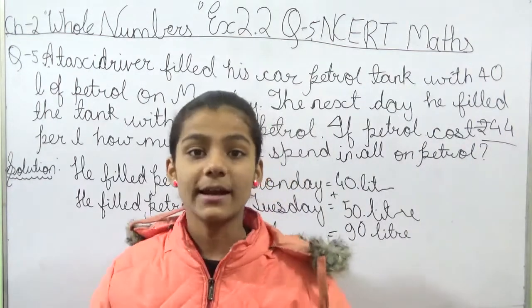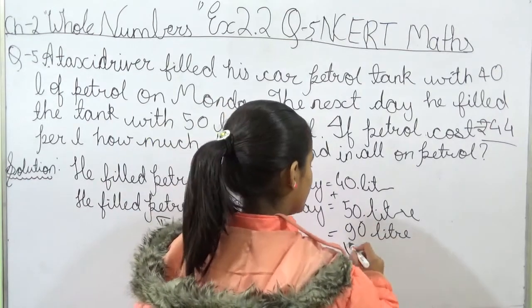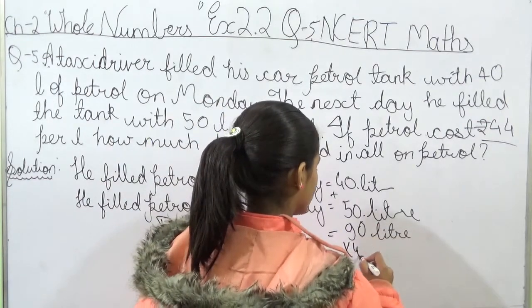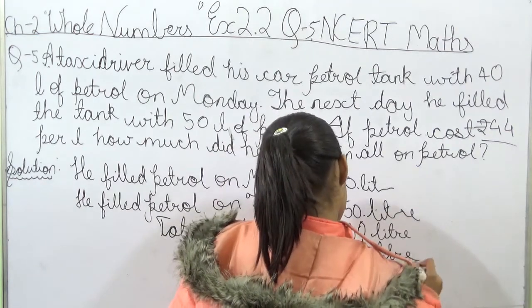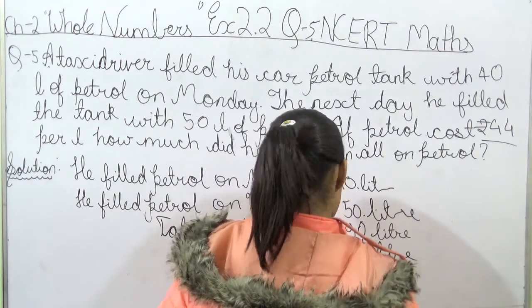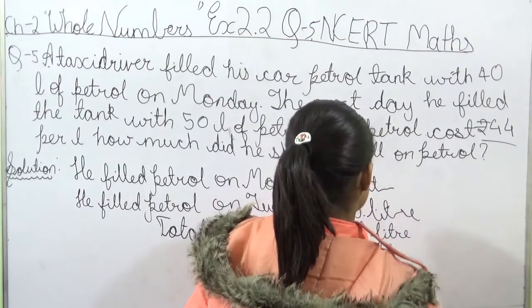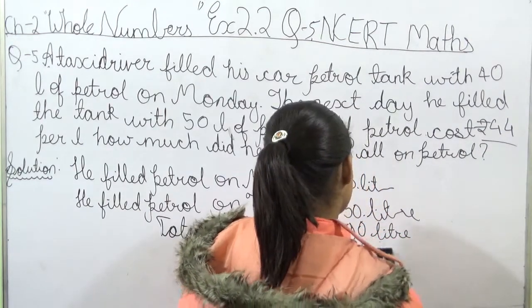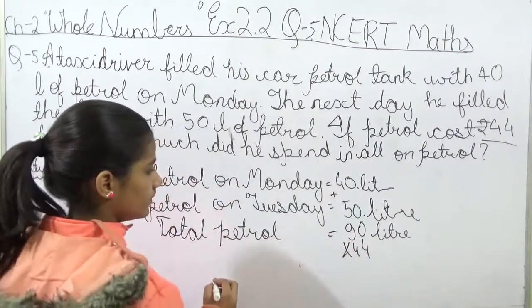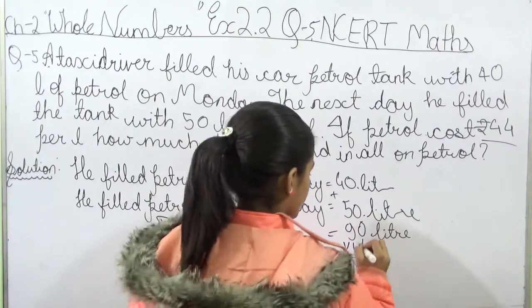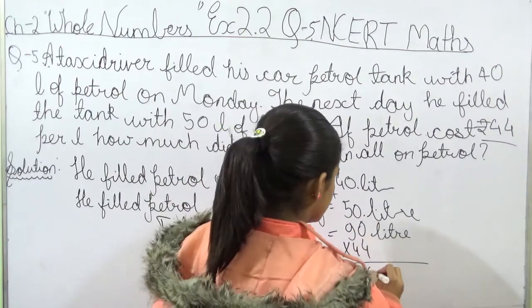Now we have to multiply 90 liters of petrol by Rs. 44 per liter to find the total amount spent on petrol.